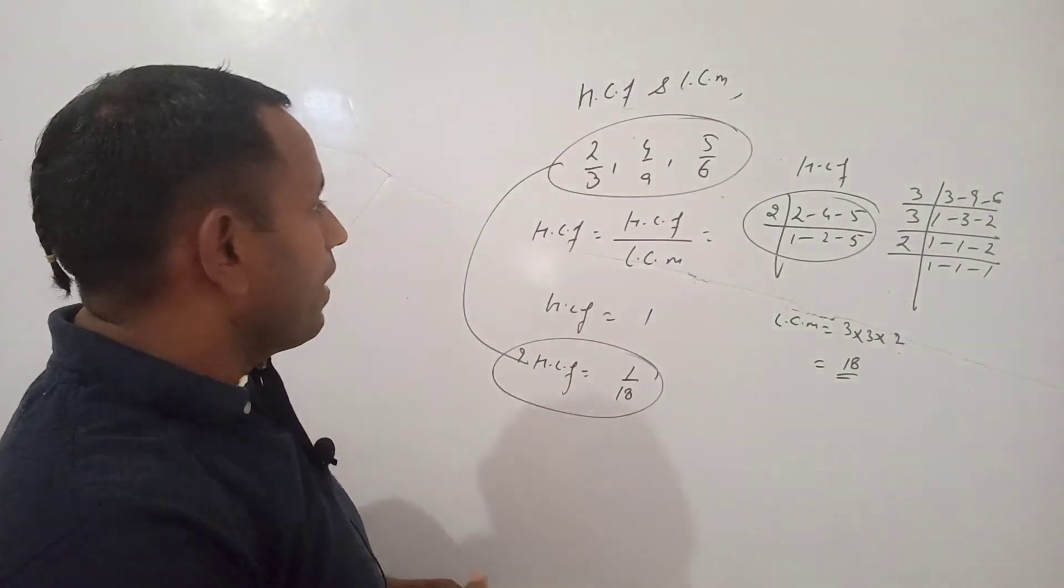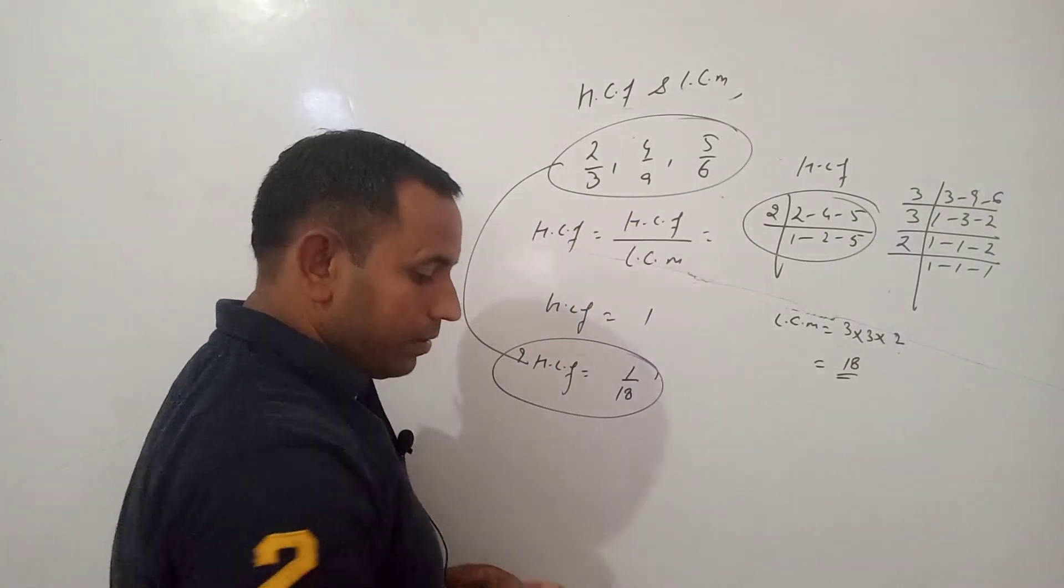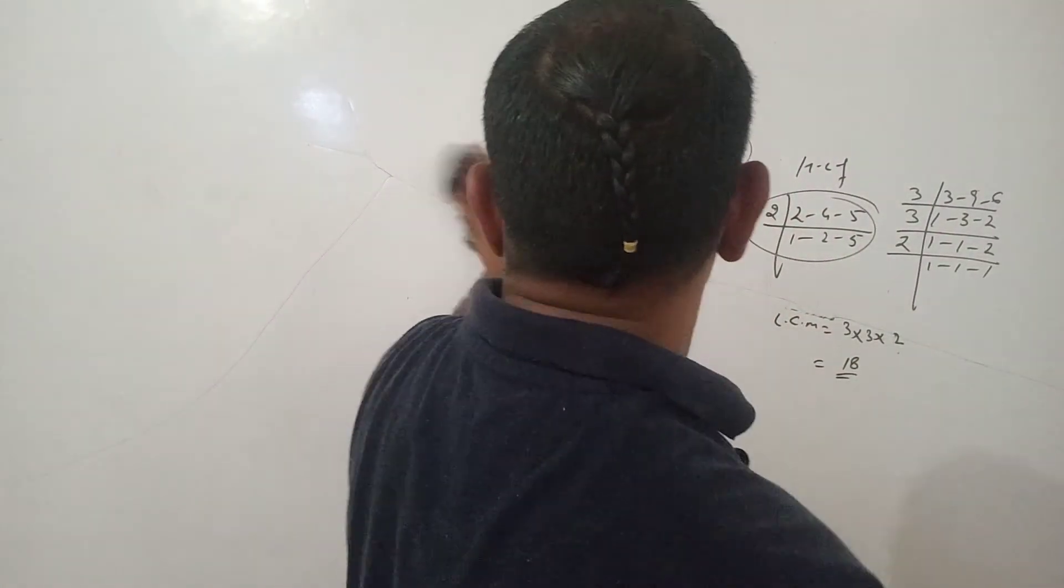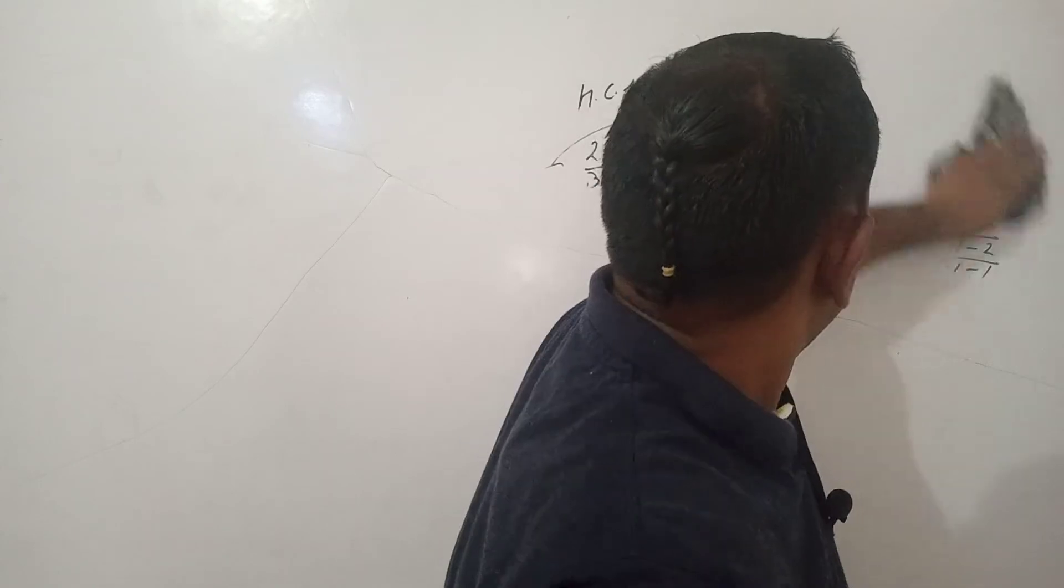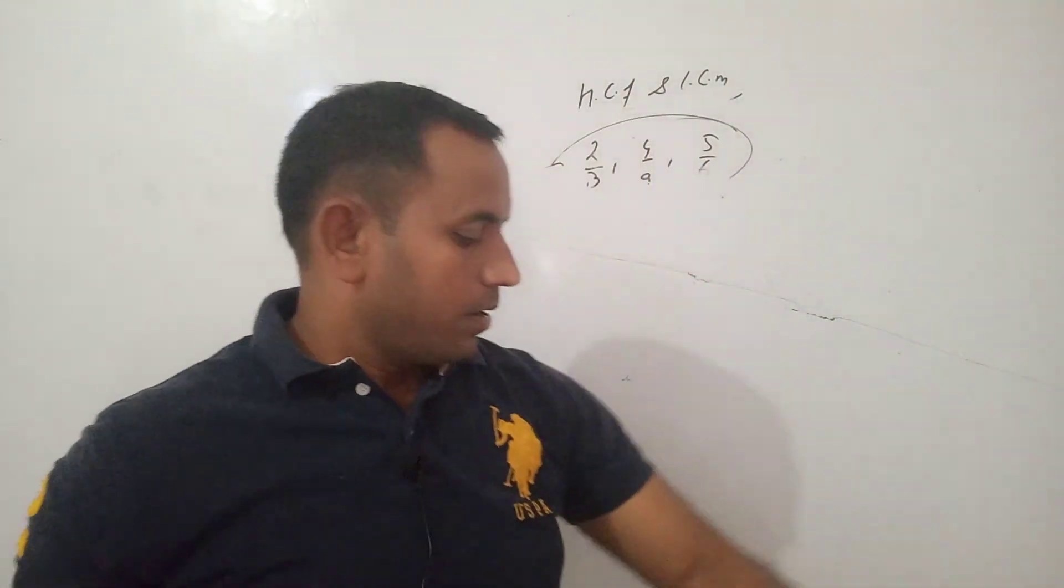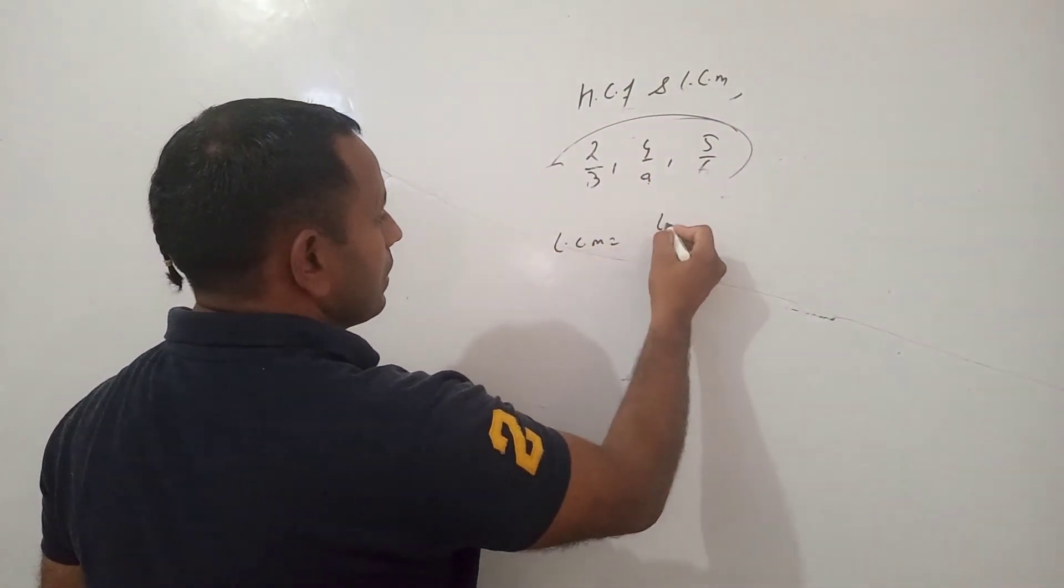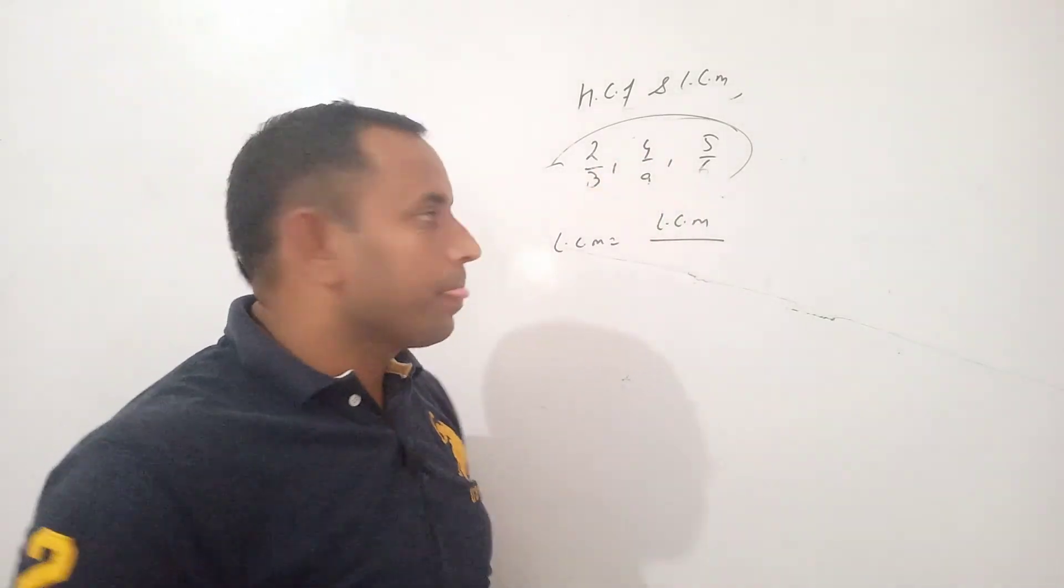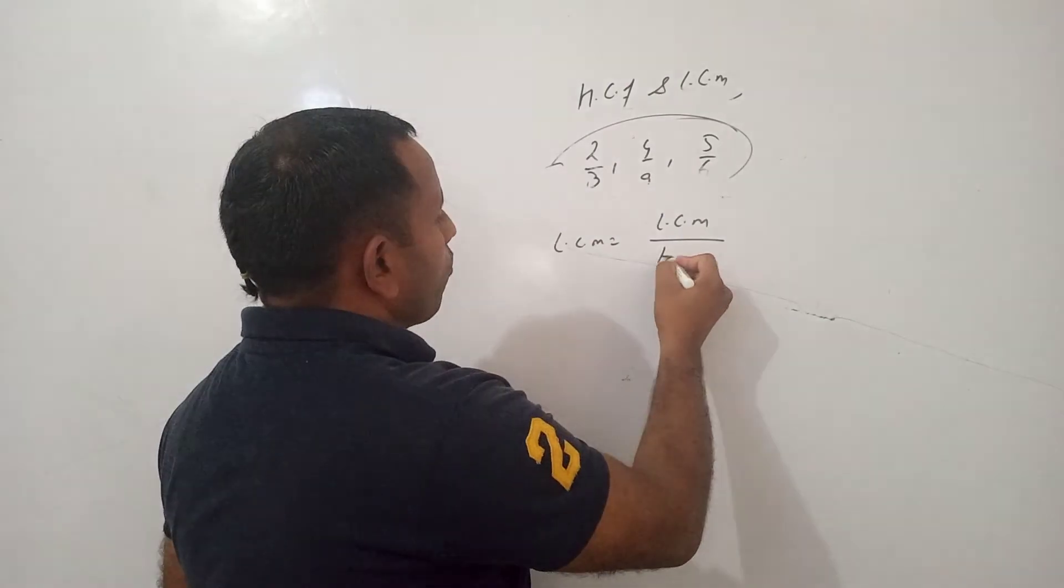Now if we have to find LCM of this number, then the formula is, we have to find the LCM of numerator and HCF of denominator.